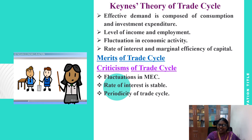Marginal efficiency of capital depends on two factors: prospective yield and supply prices of capital assets. An increase in marginal efficiency of capital will create more employment, output, and income, leading to prosperity. On the other hand, a decline in marginal efficiency of capital leads to unemployment and a fall in income and output.